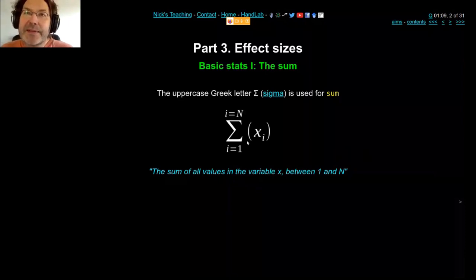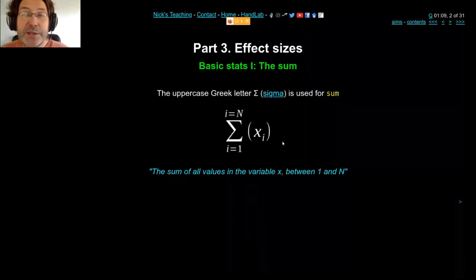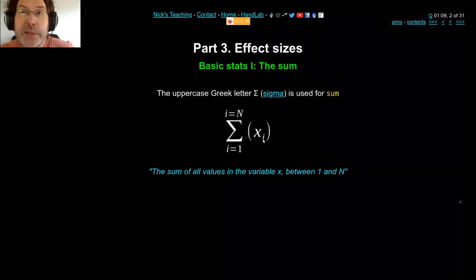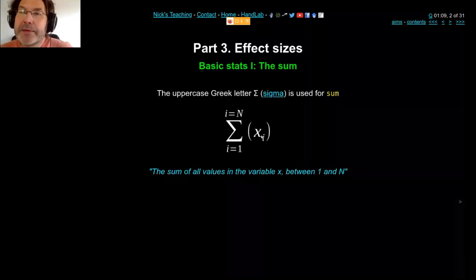The sigma symbol is used to identify the sum. When you have a sigma — this sort of E letter — with an X and a little i next to it, this notation tells you to add up all the numbers of X from the first to the last. X is just your data, so if you've got 20 data points, you add them all up. Sigma means add up all the numbers in the brackets from one to the end.